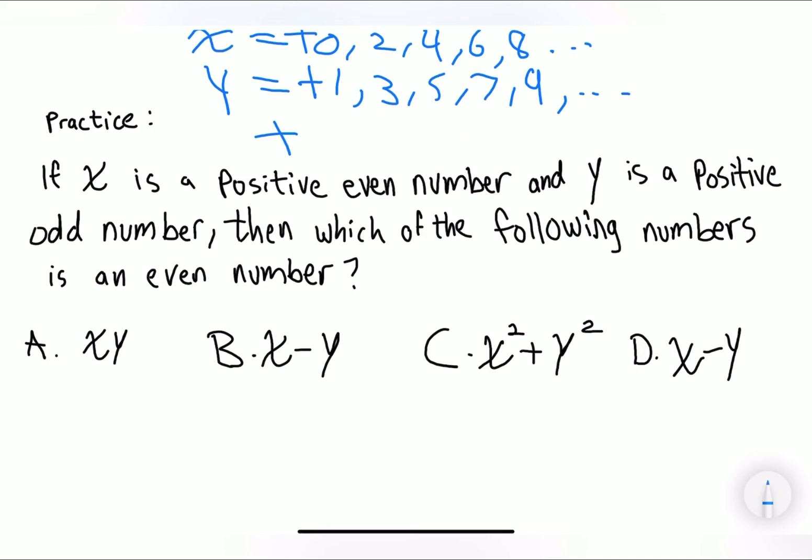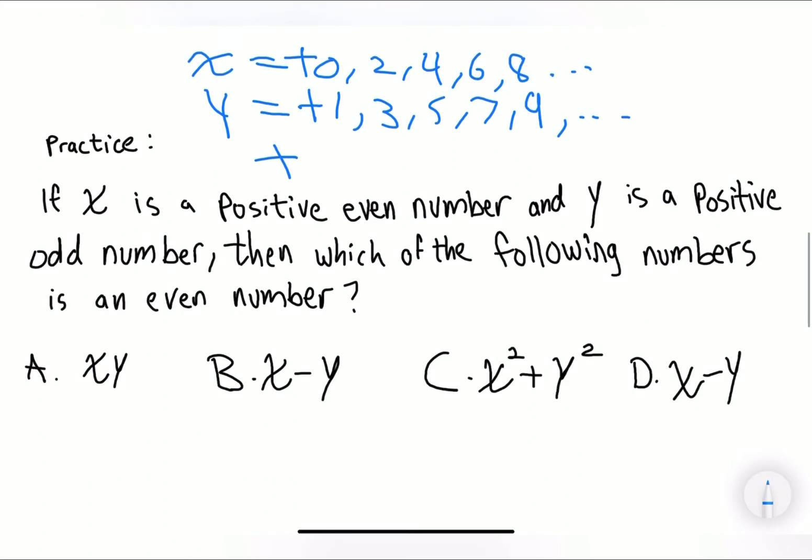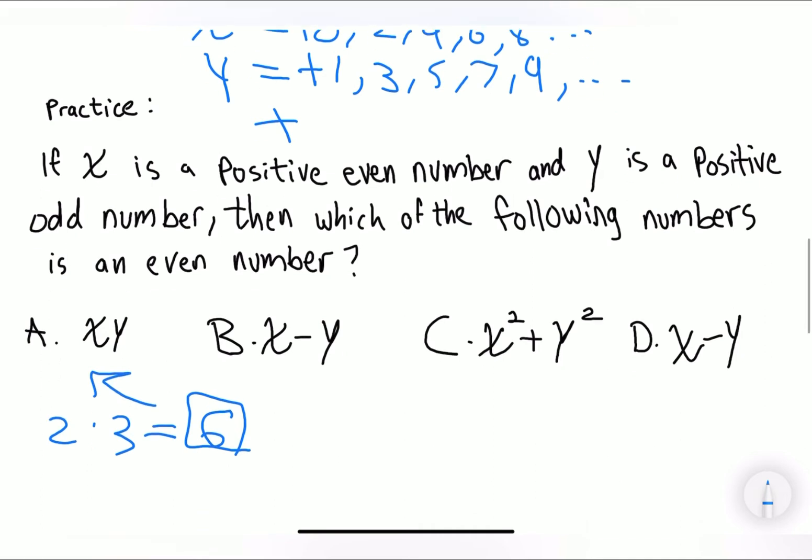Let's look at A first of all. So we have to multiply, basically since they're both positive, multiply an even number times an odd number, which is equivalent to 6. 2 times 3 is equivalent to 6. And what is 6? 6 is an even number. And it's asking which of the following is an even number. So we automatically know that it's going to be A. But for reference, let's continue and try the rest.